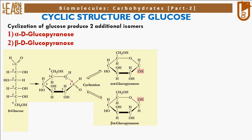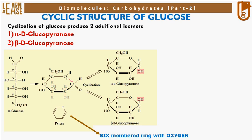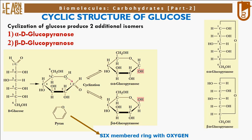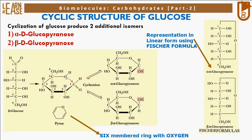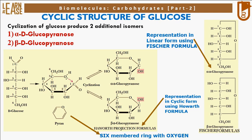Glucopyranose is a 6-membered ring containing oxygen; this 6-membered ring is known as the pyran ring, and so the naming of the cyclic structure of glucose — glucopyranose — is derived from the word pyran. The image on the right shows the representation of alpha-D-glucopyranose and beta-D-glucopyranose in linear fashion using the Fischer formula, whereas their representation in cyclic fashion is shown using the Haworth formula.